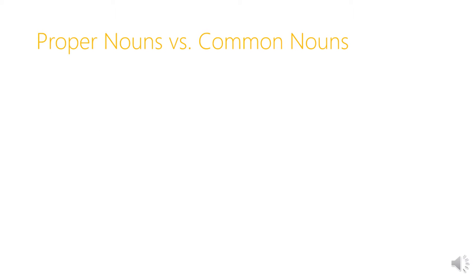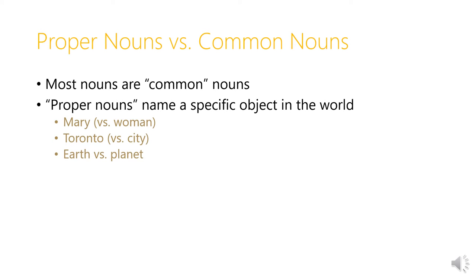The two main categories of nouns, as you may remember, are proper nouns and common nouns. Most nouns fall into the category of common nouns. Proper nouns name a specific object in the world. So where the common noun 'woman' refers to any example of the category woman, 'Mary' is a proper noun that refers to one specific woman. Similarly, 'city' is a common noun, but 'Toronto' is the name of one particular city, so that's a proper noun.